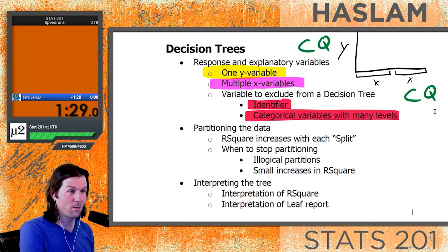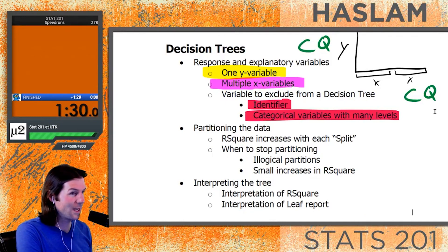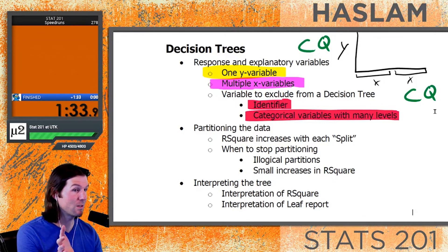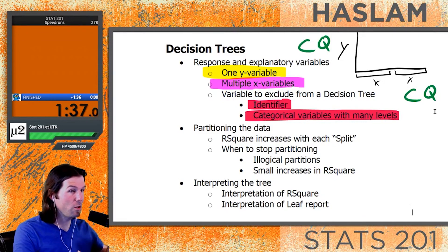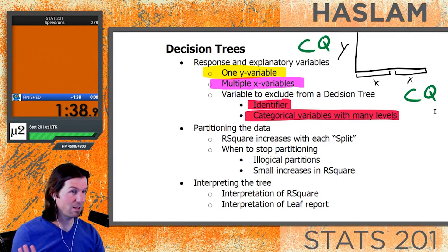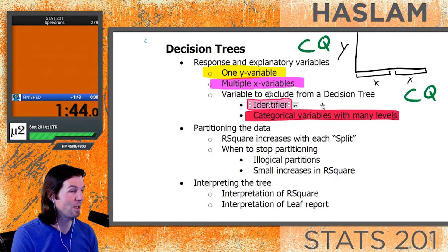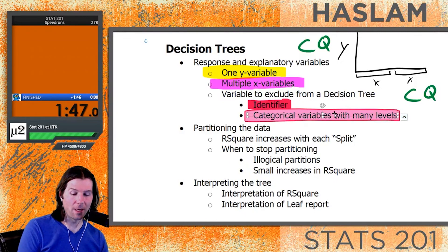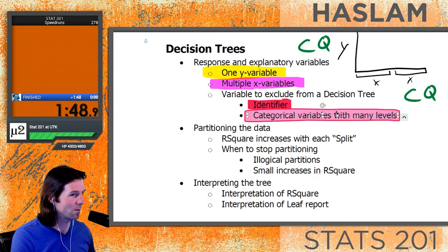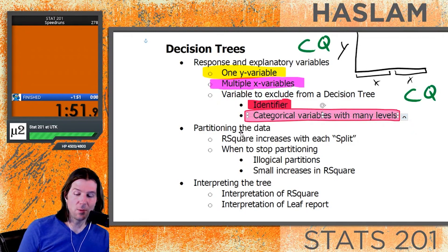You could also have responses like 'that does not apply to me,' creating even more levels than we considered. If a variable has too many levels it can act like an identifier. Identifiers are things that are unique for each and every observation. A categorical variable with many levels might act like an identifier but it's not truly an identifier.